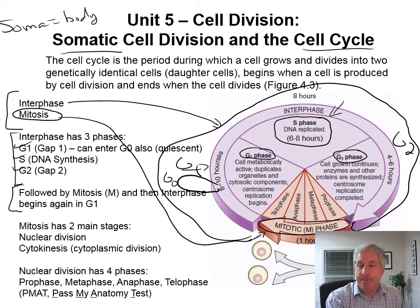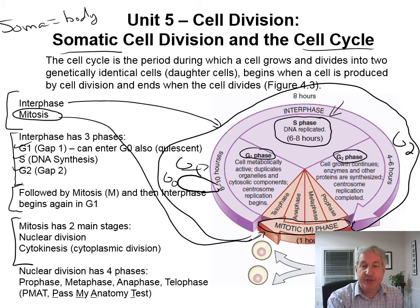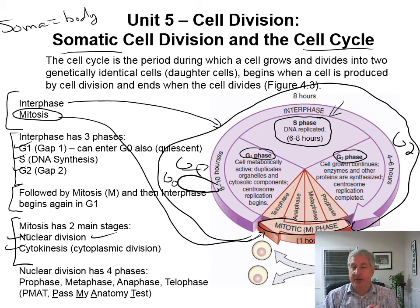So, G1, S phase, G2, M phase — then you start over in G1 phase, and from G1 you can go into G0. Mitosis has two main stages: the nuclear division stage and cytokinesis, where you divide the cytoplasm. First you divide the nucleus, then the cell pinches in and pulls apart. The nucleus reforms in each cell with the same amount of DNA.